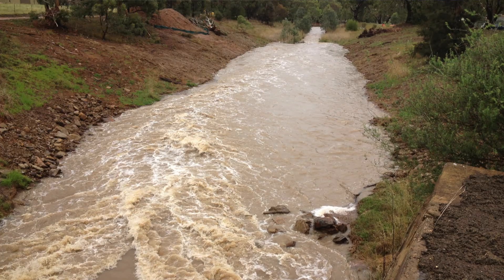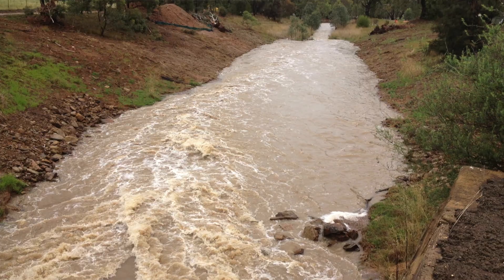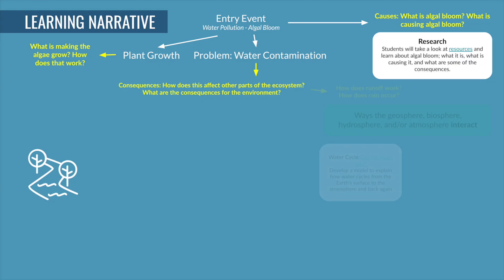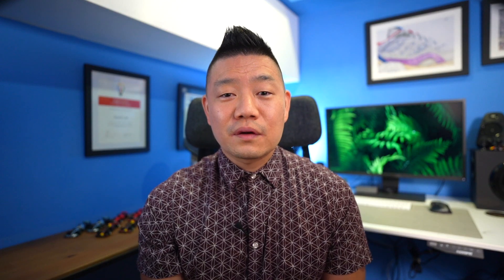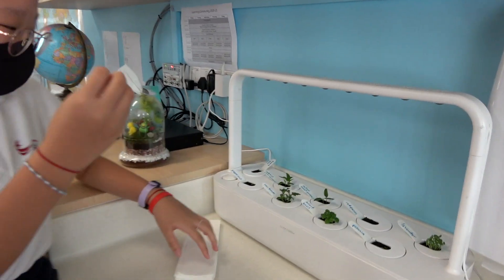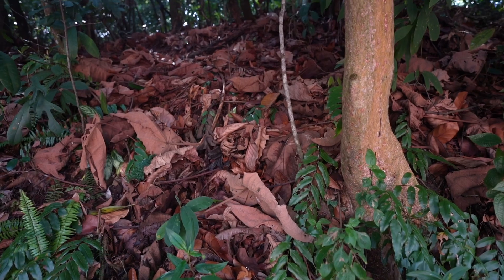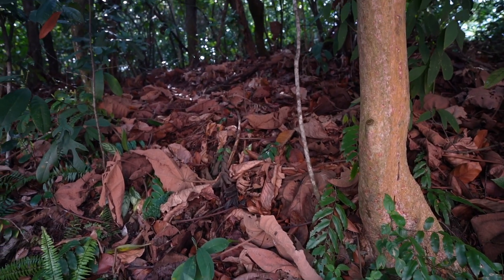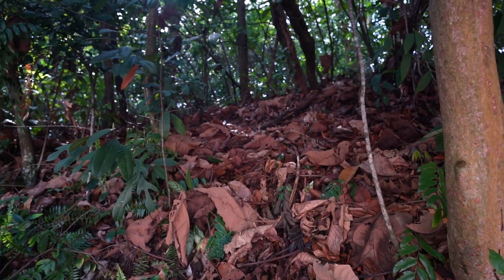After learning that algal blooms are caused by urban runoff and soil erosion due to rain, students asked questions and investigated how rain works, ultimately developing a model to explain how water cycles from the earth's surface to the atmosphere and back again. For questions about plant growth, students performed plant experiments and visited the local rainforest to learn how plants need air and water to grow.